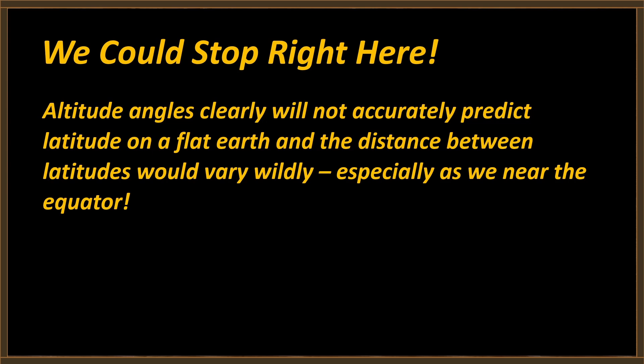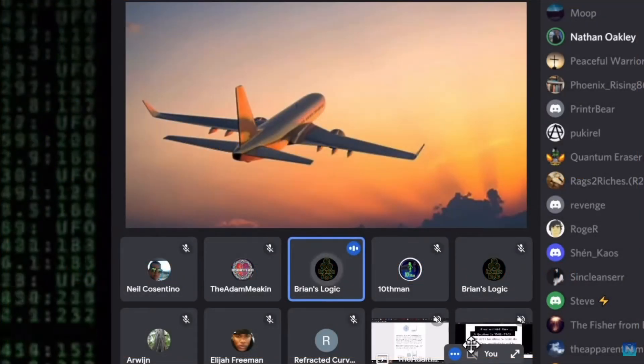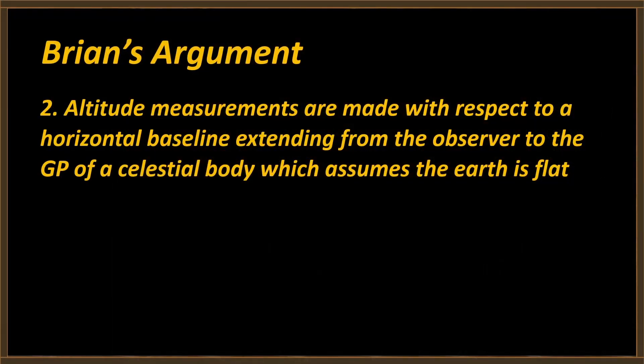We could stop right here. Altitude angles clearly will not accurately predict latitude on a flat earth, and the distance between latitudes would vary wildly, especially near the equator — this simply does not work on a flat earth. Brian's response is that every angle you take is a right angle, and the base of that right angle is a horizontal plane. Brian is making an argument that altitude measurements are made with respect to a horizontal baseline extending from the observer to the GP of a celestial body. But that assumes the earth is flat — a begging-the-question fallacy.